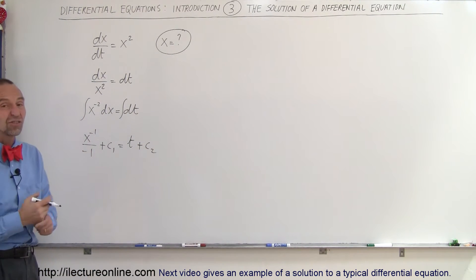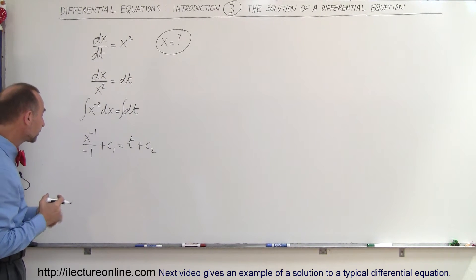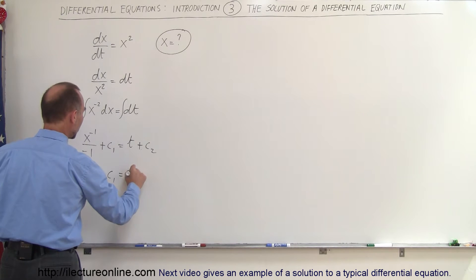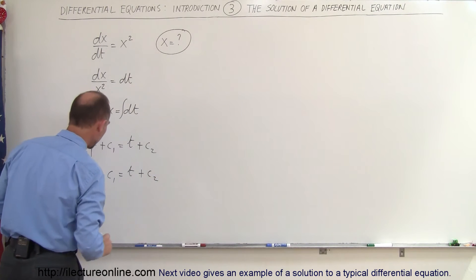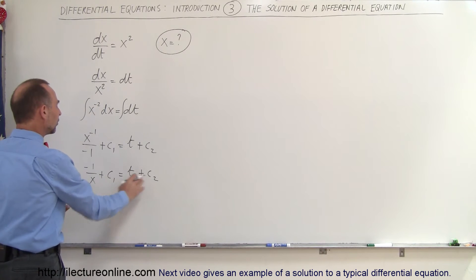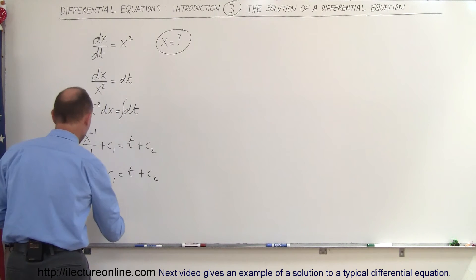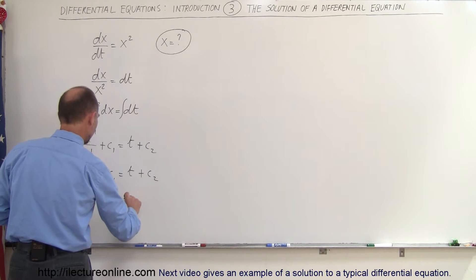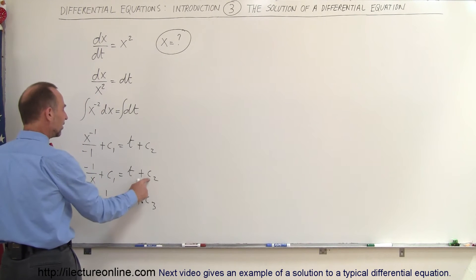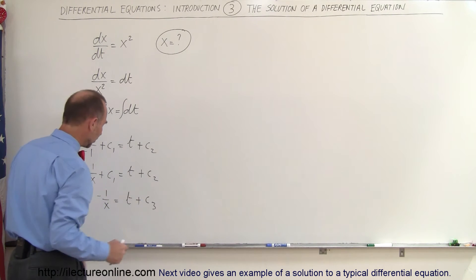We can combine the two constants and just simply call it c. So rewriting this a little bit, we can then say that minus 1 divided by x plus c1 equals t plus c2. Let's see here, I want to bring the c1 over to that side, call it c3. So we have minus 1 over x is equal to t plus c3, because if I take c2 minus c1, I'll just call it c3.